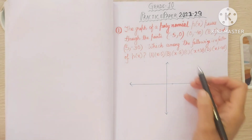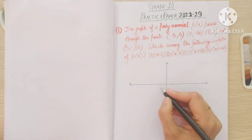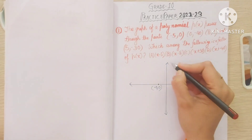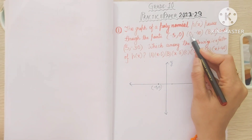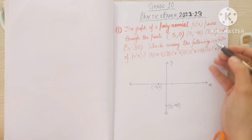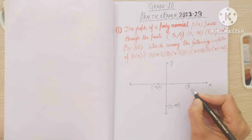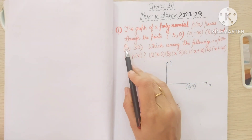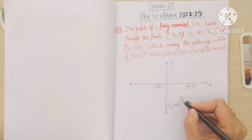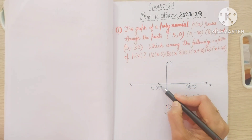We make the polynomial graph. Minus 5 comma 0 means this point comes on the x-axis on the negative side. Then 0 comma minus 48 is our first non-x-axis point. Then 8 comma 0 is again on the x-axis. And finally, 5 comma minus 30 is plotted here. So let's draw the graph of the polynomial something like that.